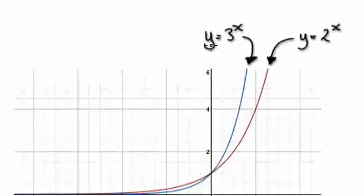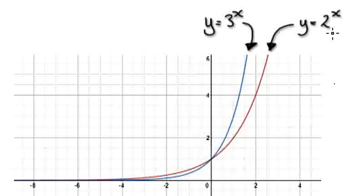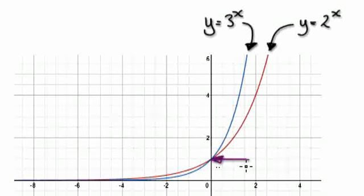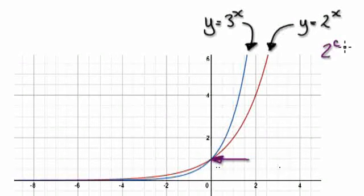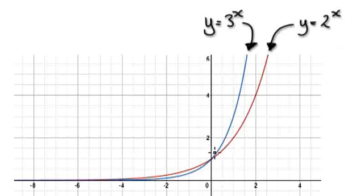If you try and plot y equals 2 to the power of x, it will look like this. This point here is 1, because 2 to the power of 0 — where x equals 0 — equals 1. And 3 to the power of 0 also equals 1. That's why the two lines cross right here.